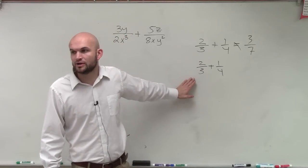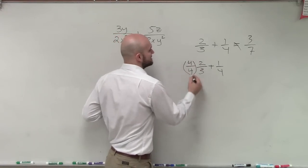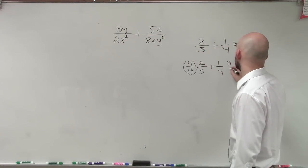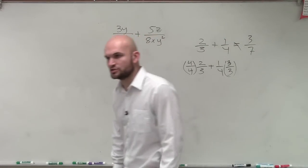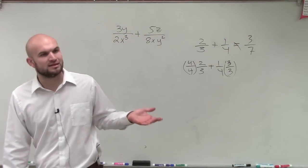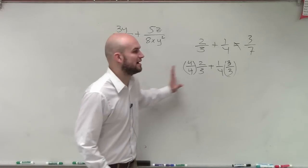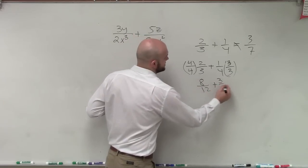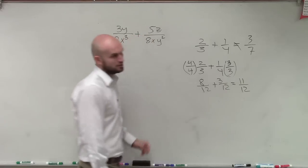So therefore, to multiply to get 3 to be 12, I have to multiply by 4 over 4. I have to multiply the top and the bottom by 4 as well as the top and bottom by 3 to produce equivalent fractions. Now I multiply across, I get 8 over 12 plus 3 over 12, which leaves me with 11 over 12.